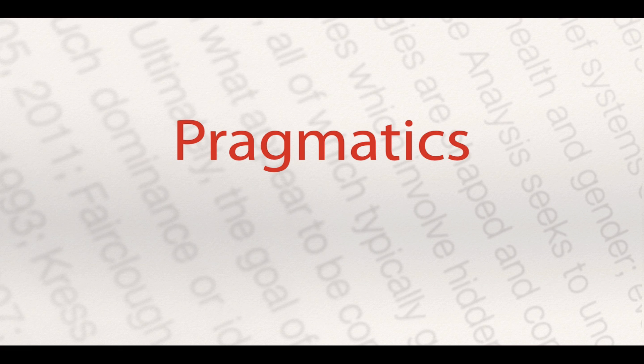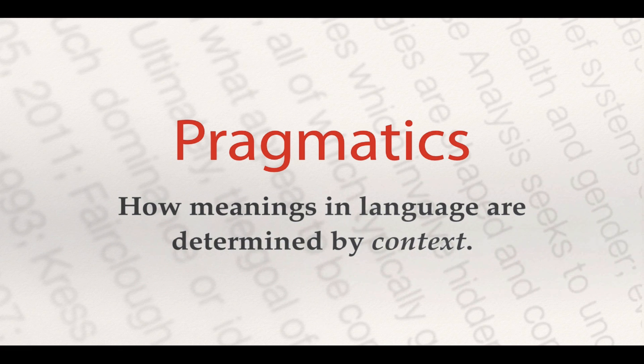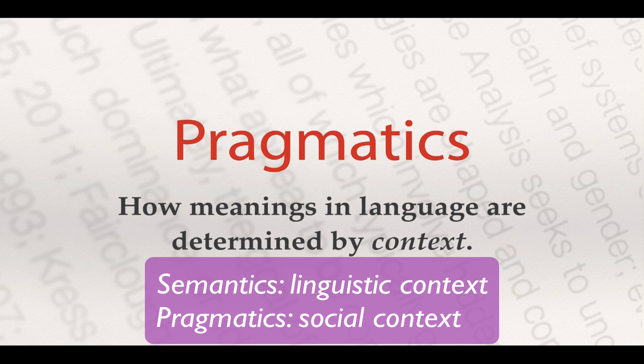And then we've got pragmatics. Pragmatics is how meanings in a language are determined by context. For semantics, a lot of the meaning of a word is coming from the linguistic information around that particular word. But in pragmatics, these are things that are extra-linguistic — they lie outside of the actual words and language being used. It's the context that's determining what the language means.